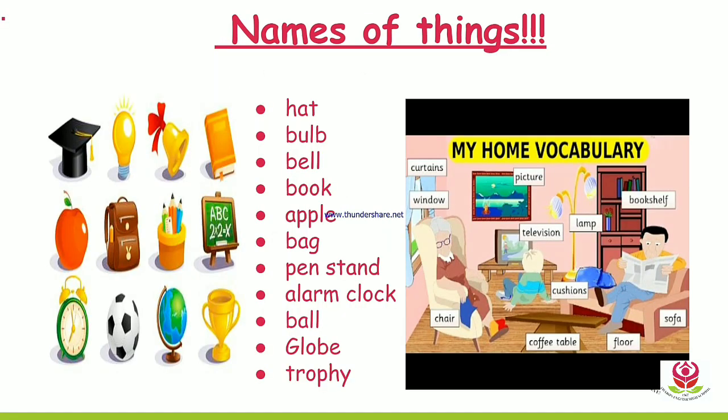Names of things: hat, bulb, bell, book, apple, bag, pen stand, alarm, clock, ball, globe, trophy. The next picture has the title 'My Home Vocabulary' — so these are the things which you can see in your home.